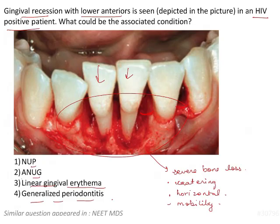Two options are purely gingival but the lesion is more osseous, so it's a periodontal issue, not gingival. We will eliminate options 2 and 3 based on that. That leaves us with generalized periodontitis and necrotizing ulcerative periodontitis.